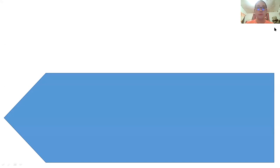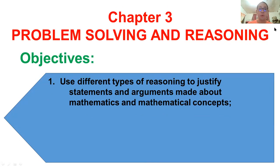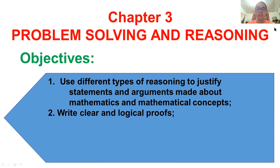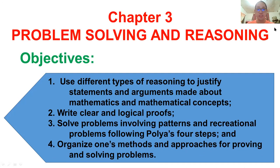To start, we'll be guided by our objectives. Our topic is problem solving and reasoning — we are in chapter three. Our objectives are: first, to use different types of reasoning to justify statements and arguments about mathematics; second, to write clear and logical proofs; third, to solve problems involving patterns following Polya's four steps in problem solving; and fourth, to organize methods and approaches for proving and solving problems.